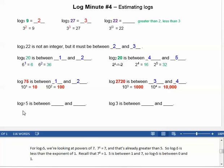For log base 7 of 5, we're looking at powers of 7. 7 to the first power equals 7, which is already greater than 5. So log base 7 of 5 has to be less than 1. We recall that 7 to the 0 power equals 1. So 5 is between 1 and 7, and the log base 7 of 5 is between the exponents 0 and 1.